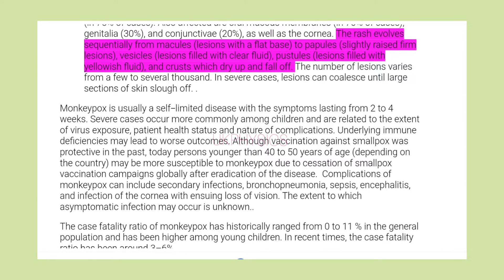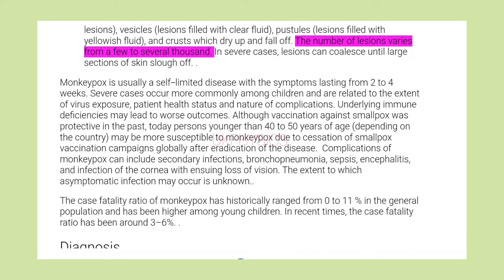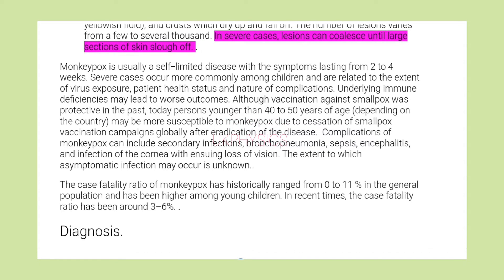The rash evolves sequentially from macules (lesions with a flat base), to papules (slightly raised firm lesions), vesicles (lesions filled with clear fluid), pustules (lesions filled with yellowish fluid), and crusts which dry up and fall off. The number of lesions varies from a few to several thousand. In severe cases, lesions can coalesce until large sections of skin slough off.